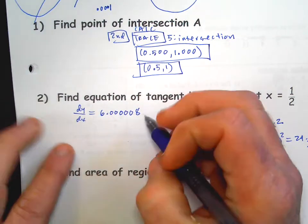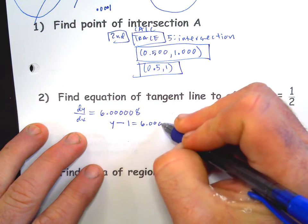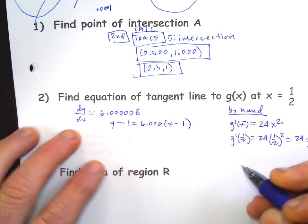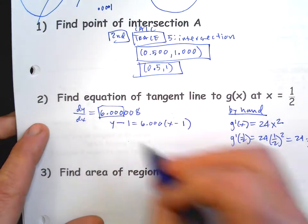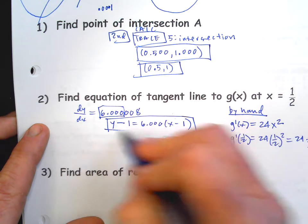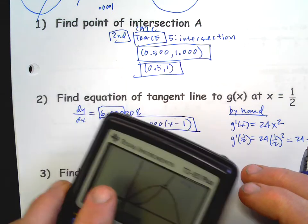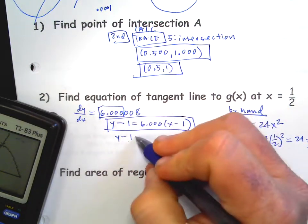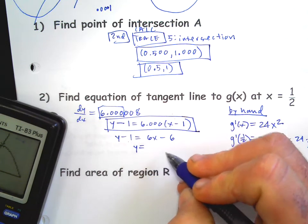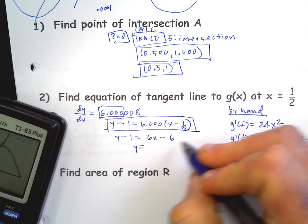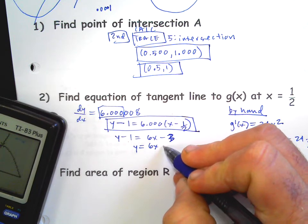So then we could write the equation of the line. We could say y minus one equals six point zero zero zero times x minus one. Now I think it would be appropriate to write the three zeros because it wasn't exactly six according to your calculator, but this is a fine answer. Point slope form, who cares. You could change it to slope intercept if you want, but whatever.